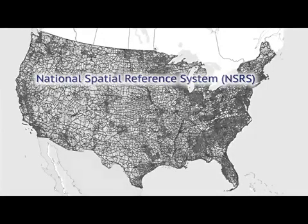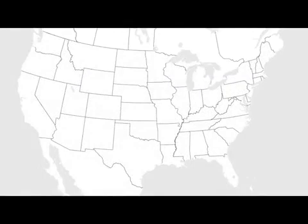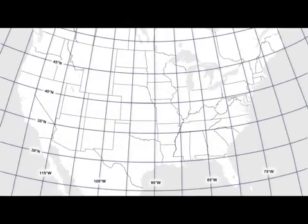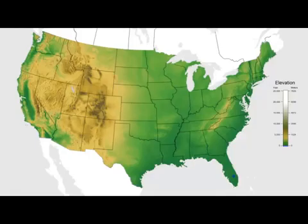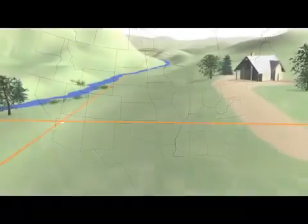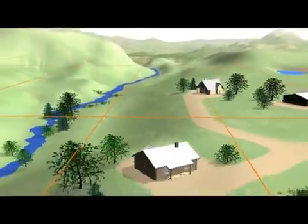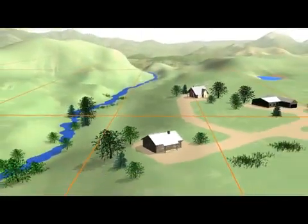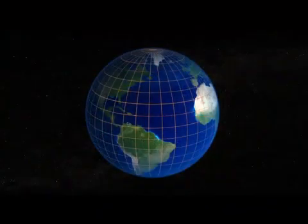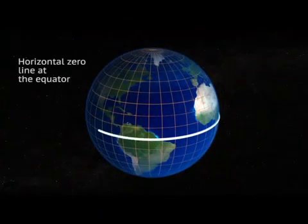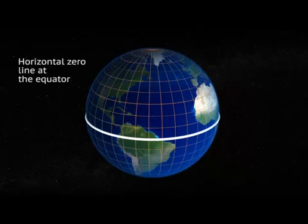For many decades, we have had two types of nationwide datums in the United States — horizontal and vertical — and they were generally separate from one another. Horizontal datums allow us to measure distances and directions across the surface of the Earth. Most horizontal datums define a zero line at the equator, from which we measure north and south.